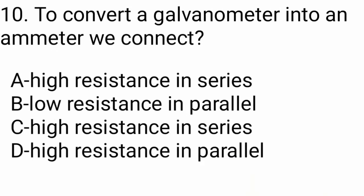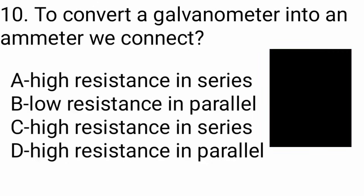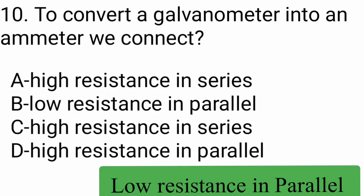Question number 10: To convert a galvanometer into an ammeter, we connect — high resistance in series, low resistance in parallel, high resistance in series, or high resistance in parallel. The answer is low resistance in parallel.